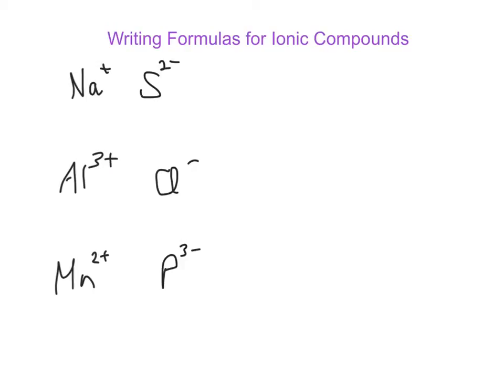In this video, let's see how the ions we've been talking about come together to form ionic compounds. When we make a compound, it has to be neutral. It has to have the same number of positives as negatives in it.